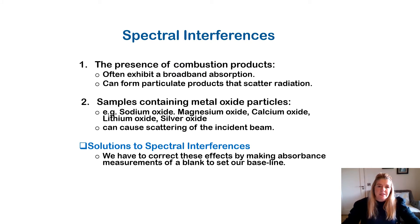Spectral interferences: the presence of combustion products often exhibit broadband absorption and can form particulate products that scatter radiation. Samples containing metal oxide particles such as sodium oxide, magnesium oxide, calcium oxide, lithium oxide, and silver oxide can also cause scattering of the incident beam. A solution to spectral interferences is to correct these effects by making absorbance measurements of a blank solution to set our baseline.